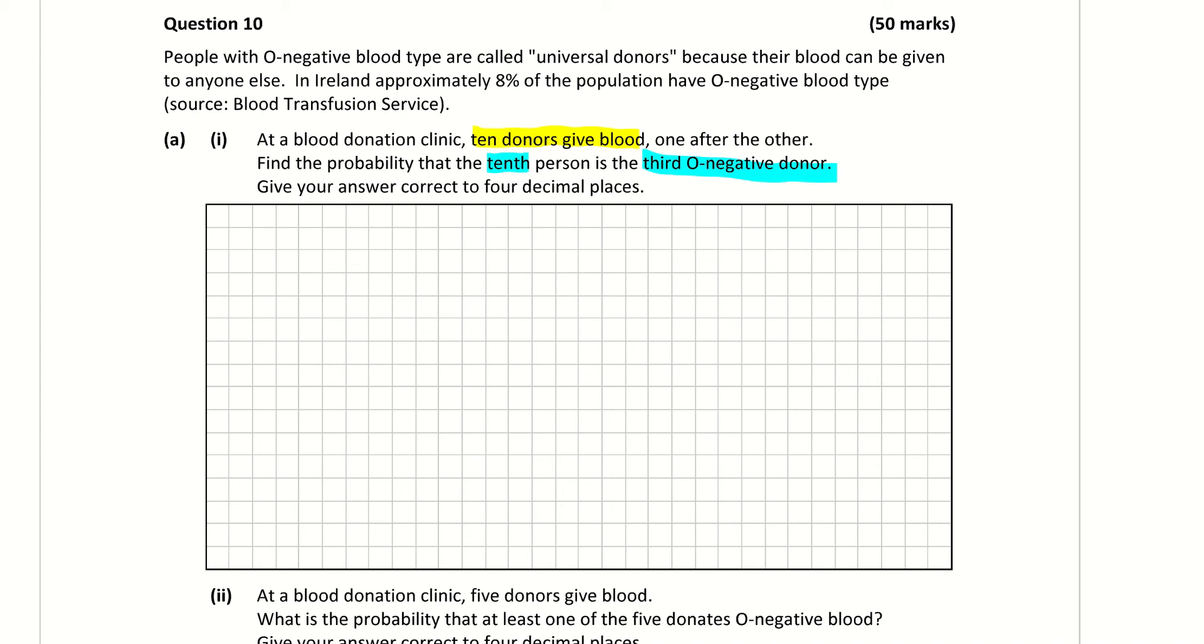So what we're looking at here is the binomial theorem. There's success and failure, O negative blood type or they're not O negative blood type. So using our binomial theorem, we have 9 people to choose from. There's only 9 because the 10th person has to be O negative and we worry about the 10th person in a second.